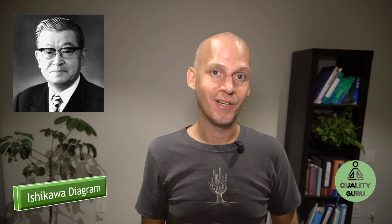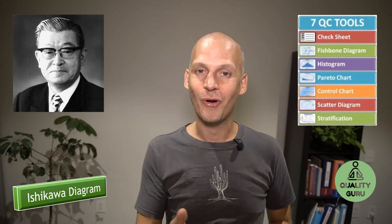For example, the quality circles, that means groups of people in an organization studying a certain area and trying to make improvements in a small group. Another one were the seven quality tools, what he is very renowned for. And out of these seven quality tools, one is the fishbone diagram or the Ishikawa diagram.